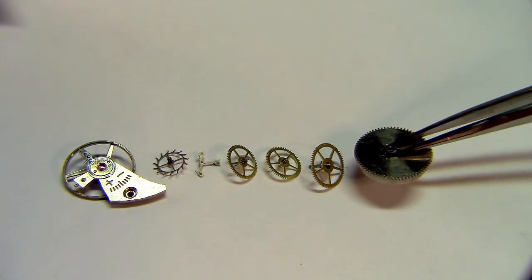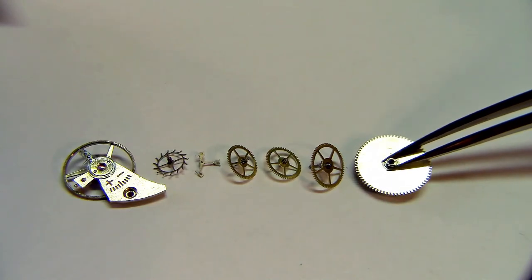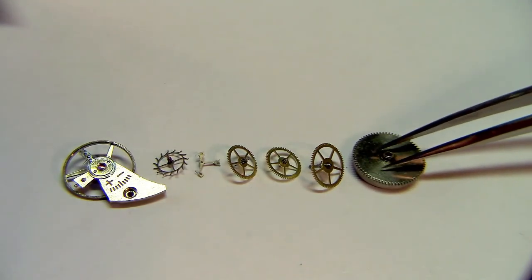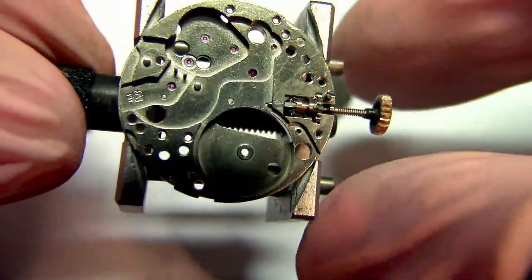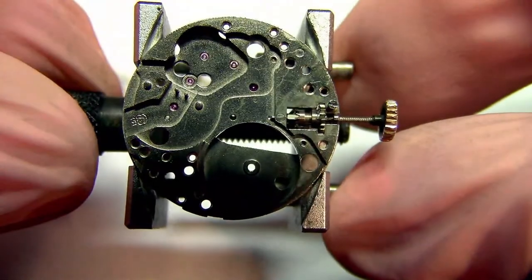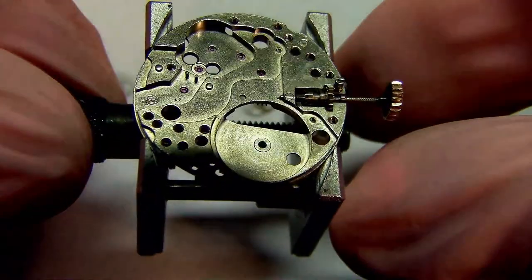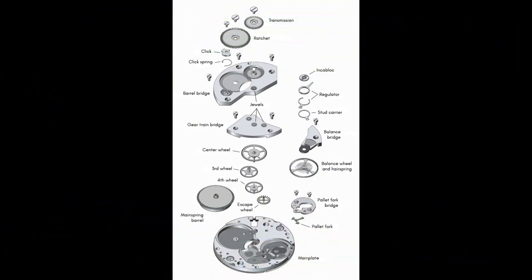The mainspring barrel makes a few turns through the entire power reserve of the movement. It depends from movement to movement, but it's usually anything between three and a half to six and a half turns through the entire 48, 40, or 42 hours that is usual for these kinds of movements.